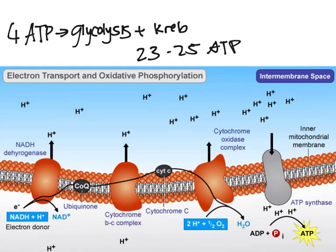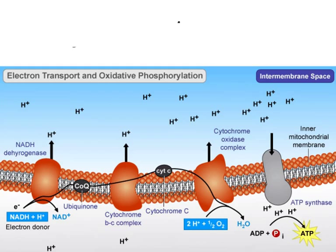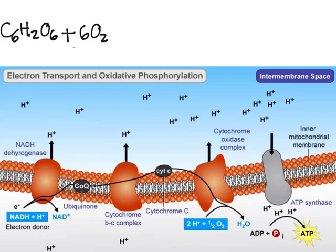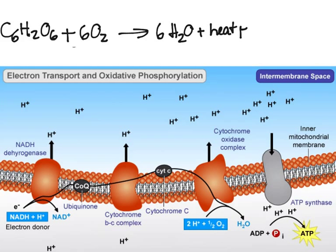A formula that might be important to know: the formula for cellular respiration is essentially the opposite of photosynthesis. C6H12O6 plus 6 O2 gives you 6 H2O, heat, and 27 to 29 ATP.